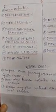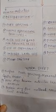Under human activities there are many points, but we are going to discuss only a few. Number one is deforestation — the excessive cutting of plants and trees. As a result, the soil becomes loose and exposed to erosion by agents like water and wind.